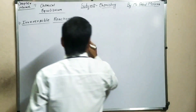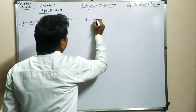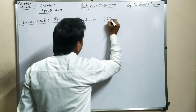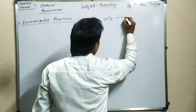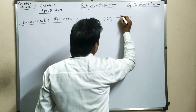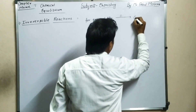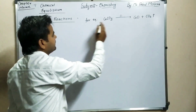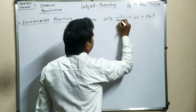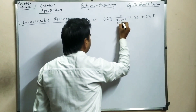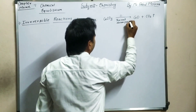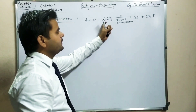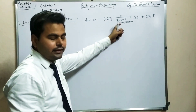For example, we can understand it by taking an example. Thermal decomposition of CaCO3 in an open vessel — this is a type of irreversible reaction. Thermal decomposition means when any compound gets decomposed when it is heated.